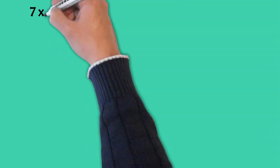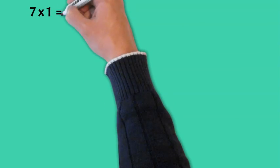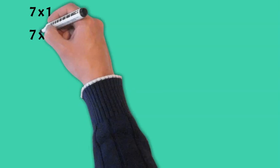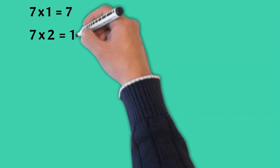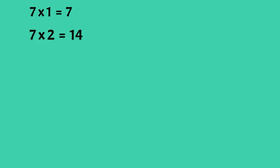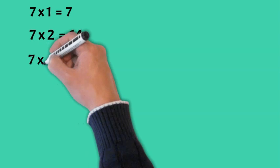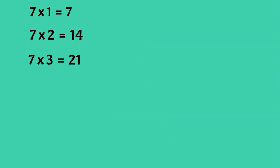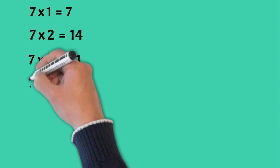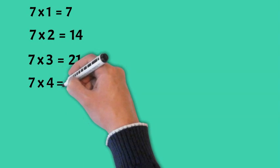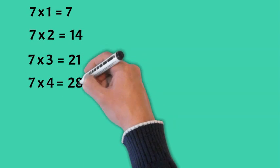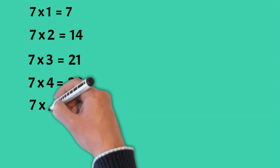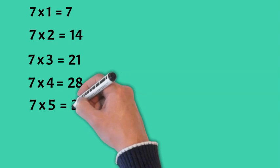7 x 1 is 7. 7 x 2 is 14. 7 x 3 is 21. 7 x 4 is 28. 7 x 5 is 35.